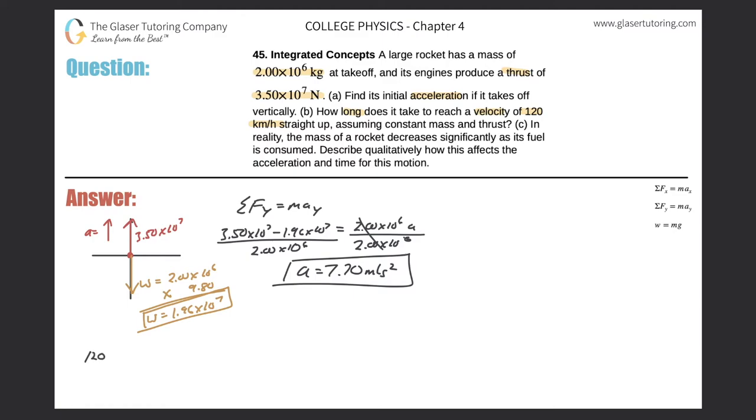So we'll do that down here. 120 kilometers per one hour. Get rid of the kilometers, they go on the bottom, meters on the top. There's a thousand meters in one kilometer. Great, so they're gone. I want to get rid of hours now. Since they start in the denominator, I need to put them in the numerator. I know the relationship between hours and minutes: there are 60 minutes in one hour.